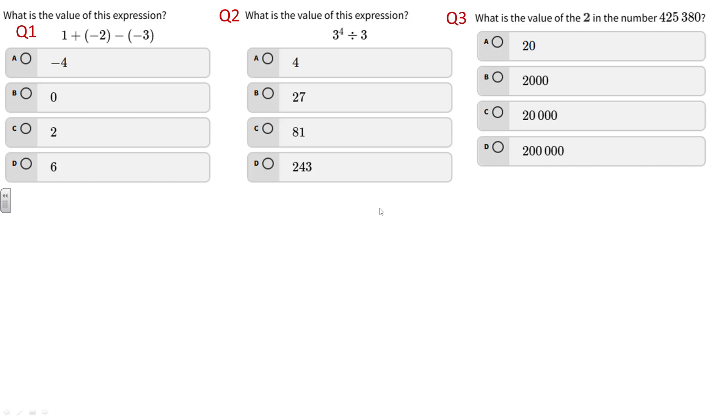On to the first few questions - these are all to be done without the use of a calculator. Question number one: you're adding 1 + (-2) and then subtracting (-3). Subtracting negative three is the same as adding three. Adding negative two is the same as subtracting two. There are two positive integers, 1 and 3, so you could add 1 and 3 together and that's 4, then subtract 2 would be 2.